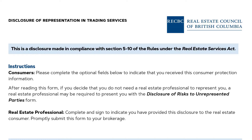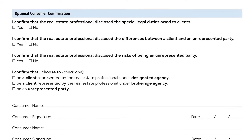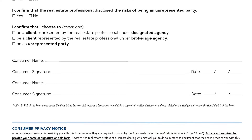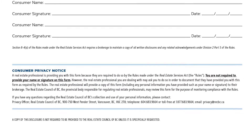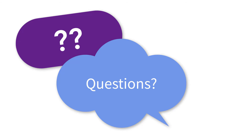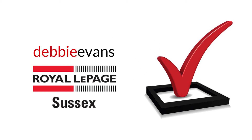The purpose of the last two pages of the Disclosure of Representation and Trading Services form is to document that the disclosure has been made to you, the consumer. It includes a mandatory checklist and name/signature field that the licensee will complete, as well as an optional checklist and name/signature field that may be completed by the consumer. Our brokerage requires that the form be completed by the consumer anytime we are providing trading services. Please ask your realtor any questions you may have — once they have answered your questions, you can best determine how you'd like to complete the form, enabling your realtor to provide you with appropriate trading services.